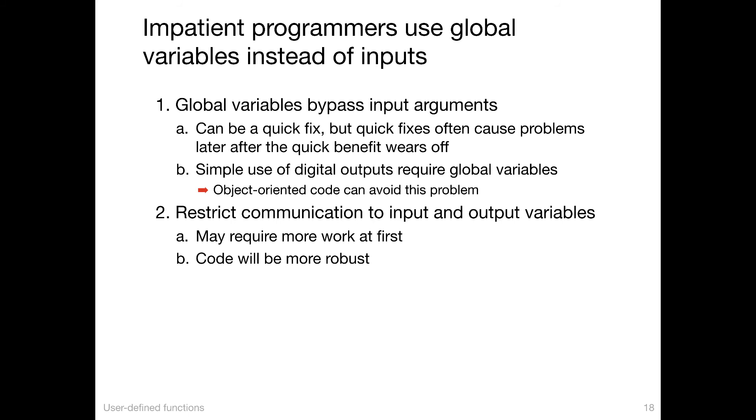So global variables bypass input arguments. It can be a quick fix, but quick fixes often cause problems later. One case in beginning Arduino code where this is almost unavoidable is that the simple use of digital outputs. When you declare a digital output, you declare how it's configured in the setup function, and then you use it again inside the loop function. So a global variable is important there or necessary there for simple configurations because the global variable has no way of being set and then returned by setup and loop. Setup and loop have no input arguments. They have no output arguments. So global variables are the only way around that.